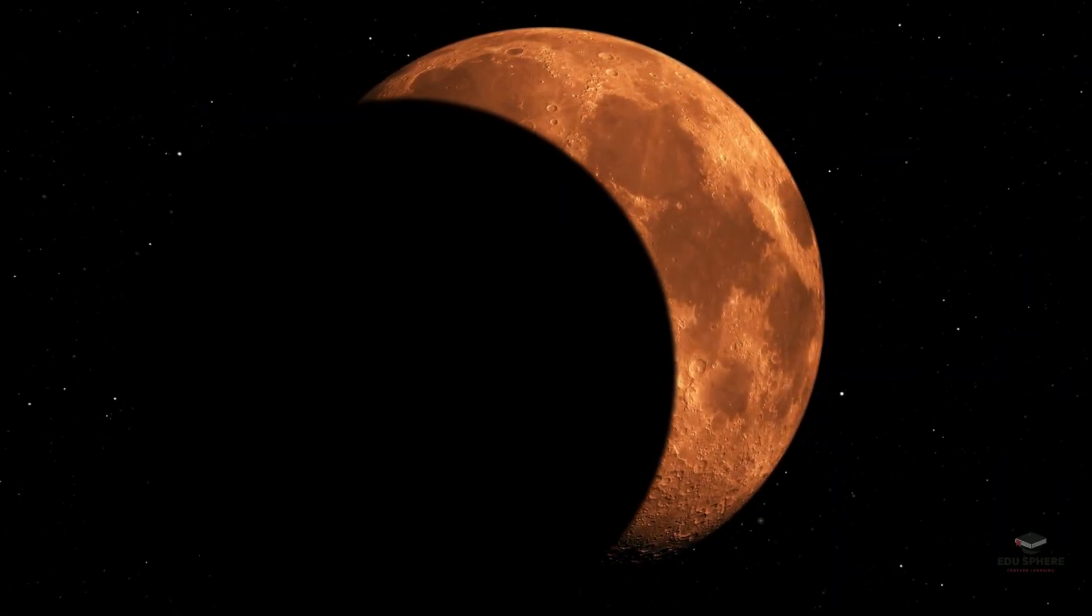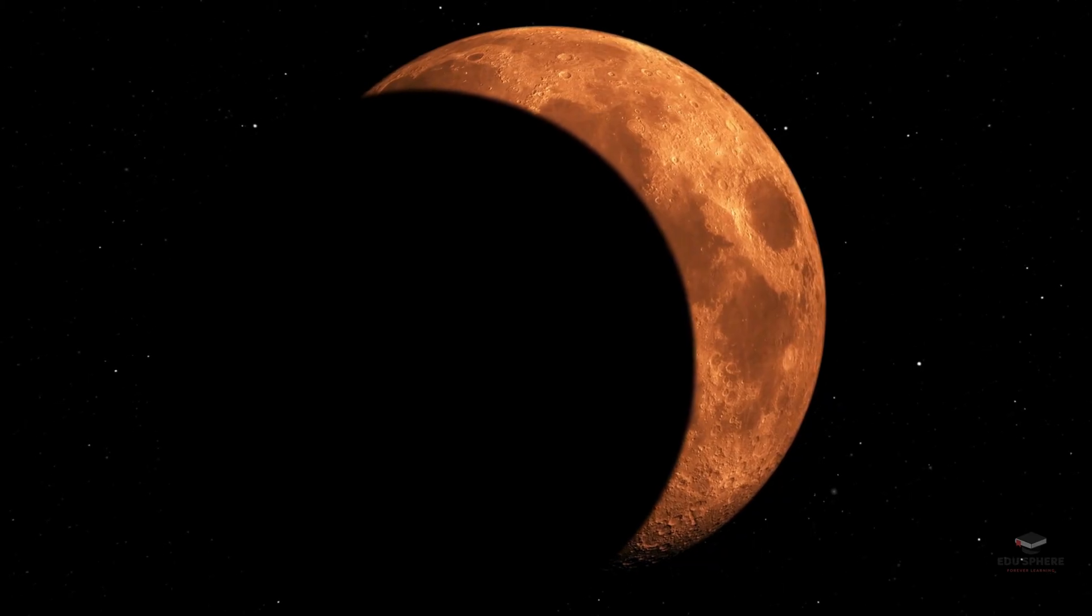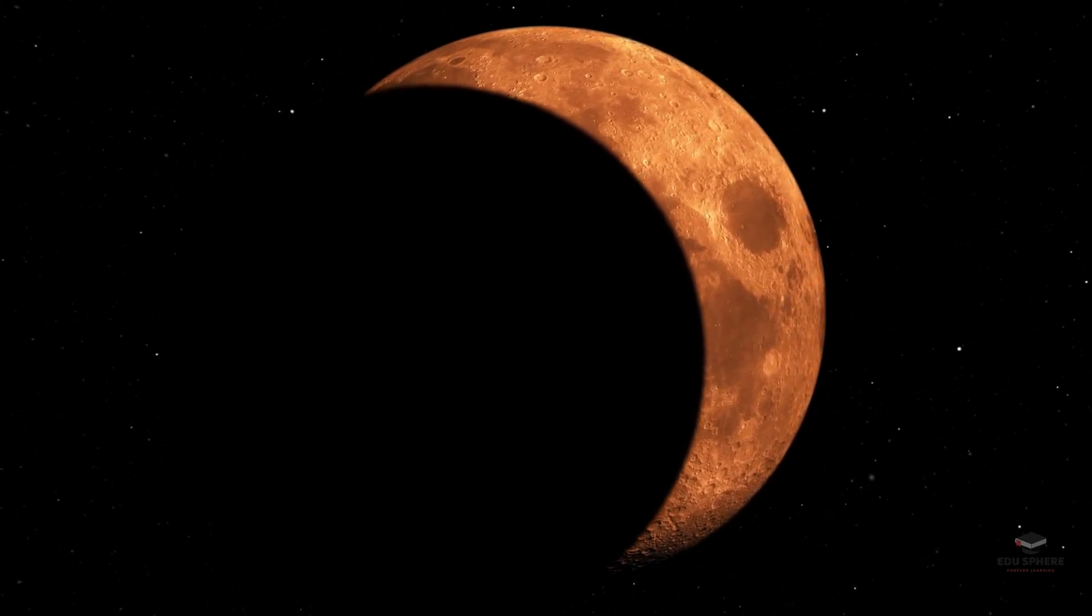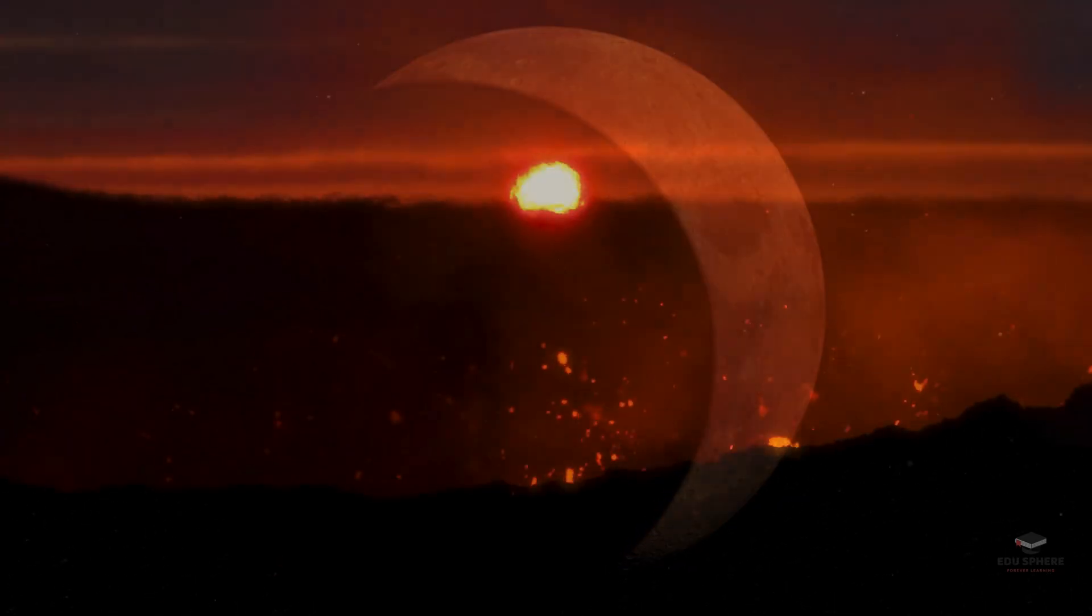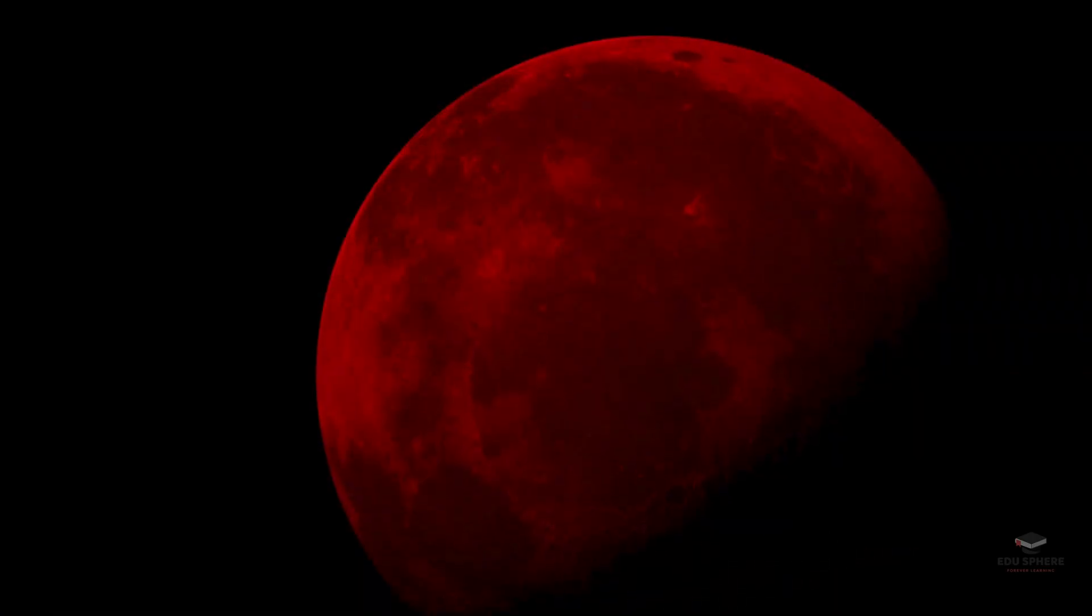How red the moon appears can depend on how much pollution, cloud cover, or debris is there in the atmosphere. For instance, if an eclipse occurs soon after a volcanic eruption, the additional particles in the atmosphere can make the moon appear darker than usual.